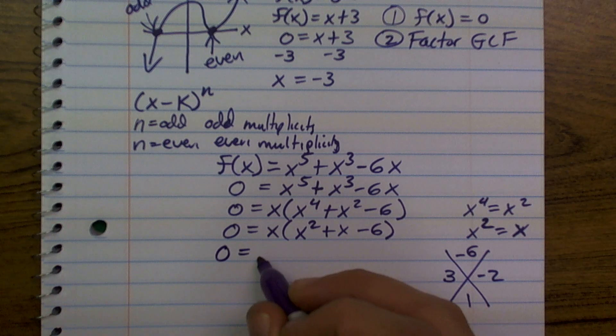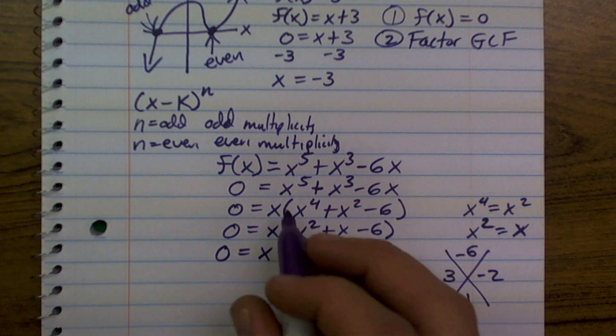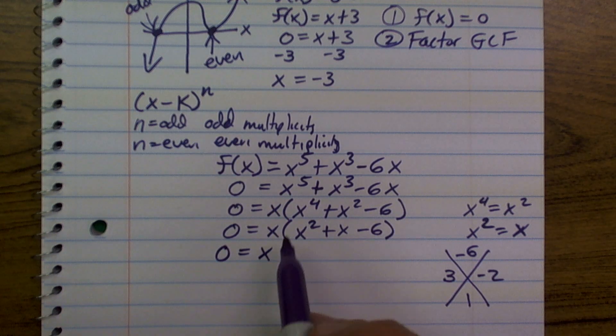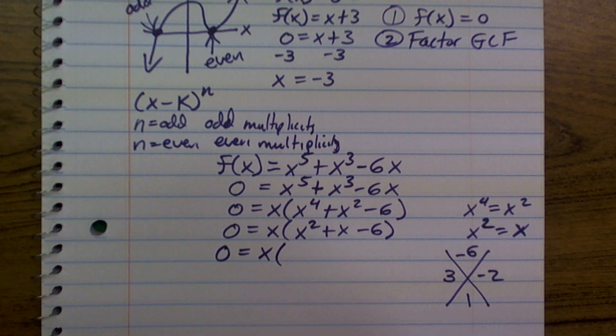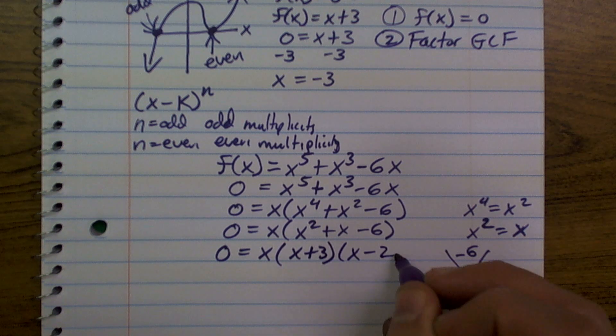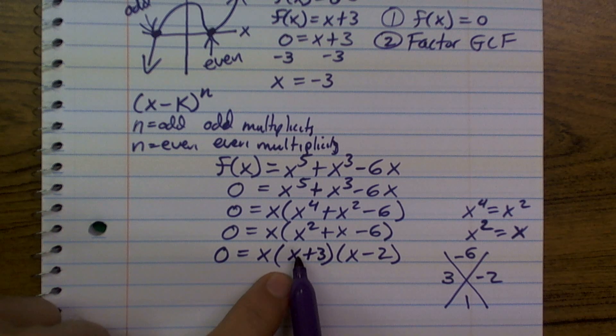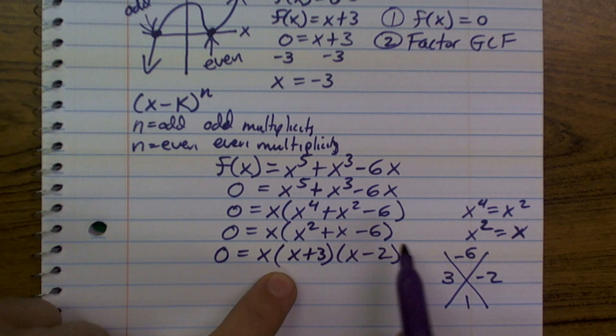So, let's say 0 equals x and we could write x is x times 0 if we wanted to put it into our form of x minus k but we'll just leave it as x. Then, x plus 3 times x minus 2. And, what you notice if you were to factor this back out or foil it back out, what you'll notice is you would get back your trinomial.